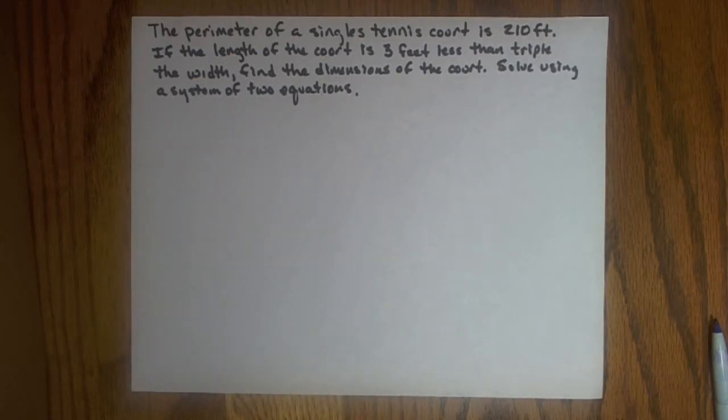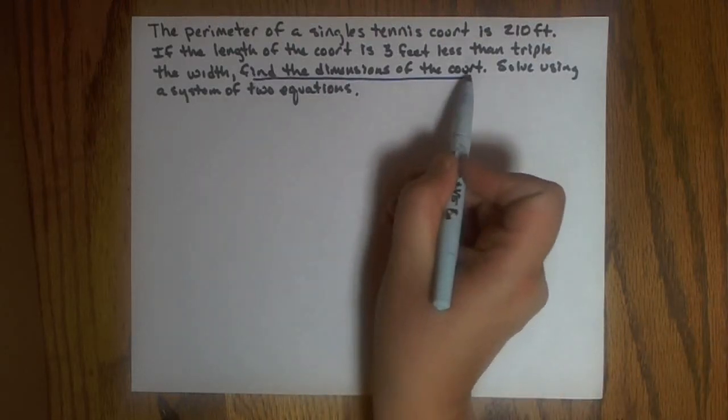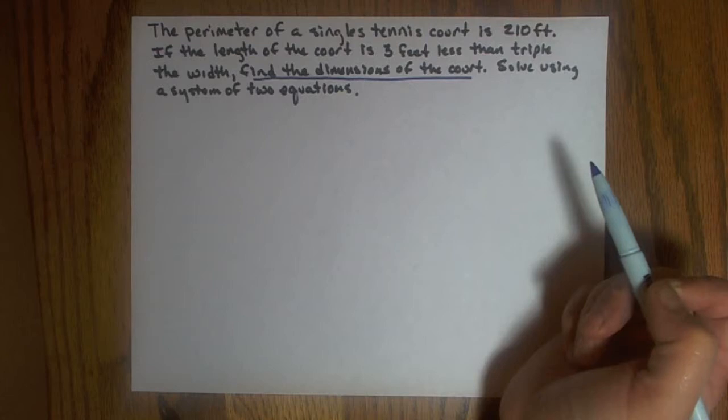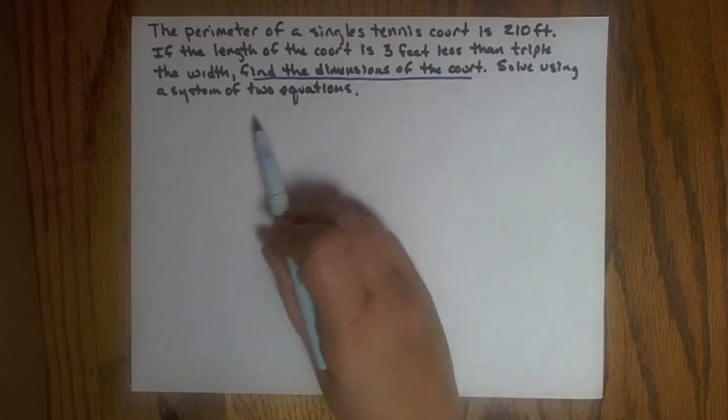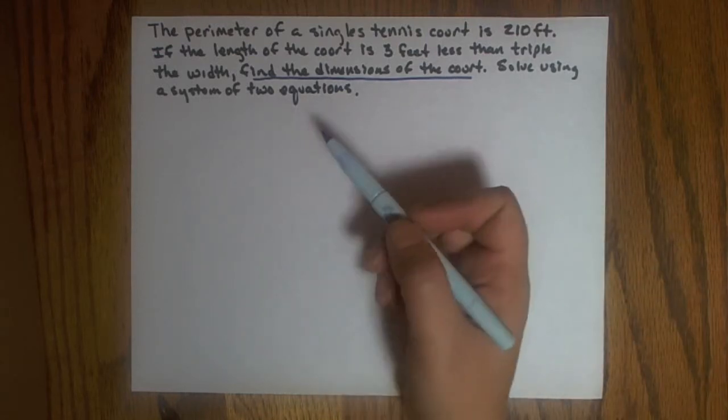So when I first start a story problem, I read it and I ask myself, what is the story problem asking? In this case, it's asking me to find the dimensions of the court, which I know means the length and the width. So since I'm solving using a system of two equations, I will have two unknowns.